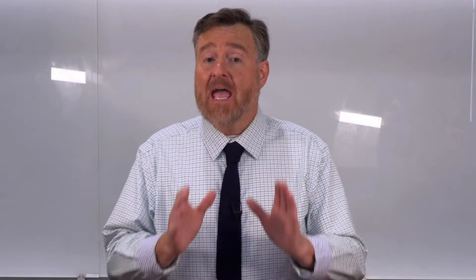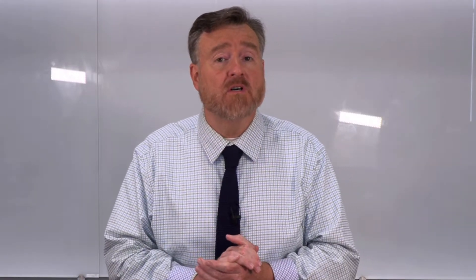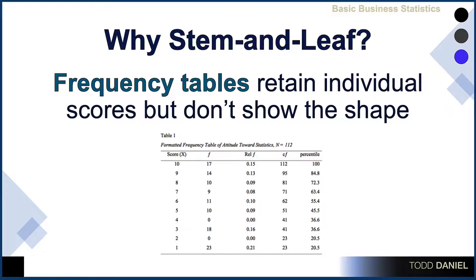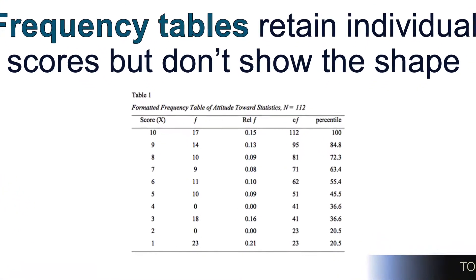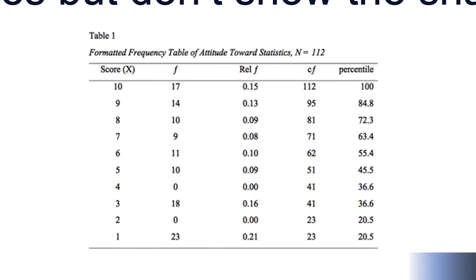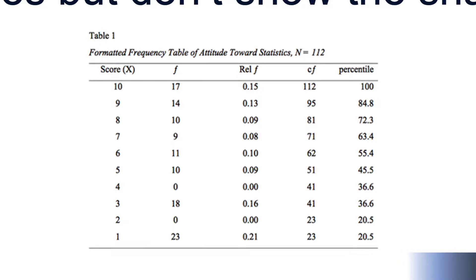On the other hand, a frequency table preserves those individual scores. We put our data into columns with counts, relative frequencies, and percentiles, and now we can see exactly how many people scored in each category and what their percentage was. However, we can't see the shape of the distribution — is this distribution bimodal or normally distributed? There's no way to tell simply from a frequency diagram.